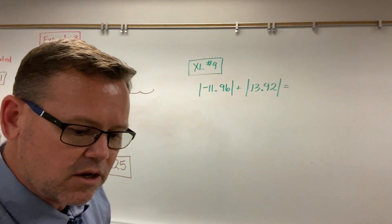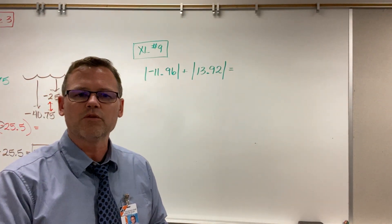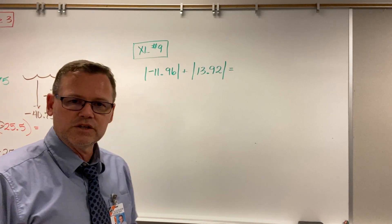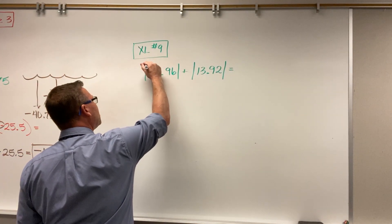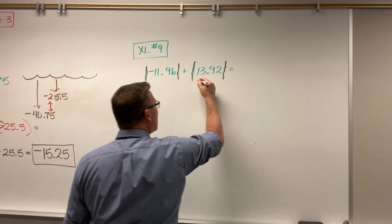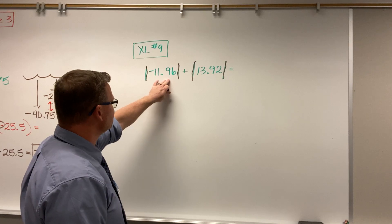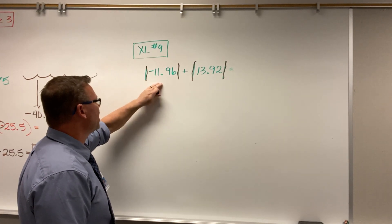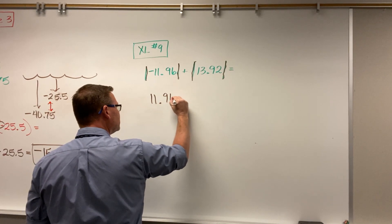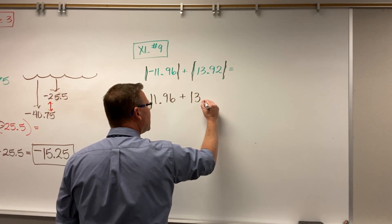I'm only showing you part of XL9 because I want you to really understand how this works. You need to be working out these problems yourself — if you don't get it right, you hit 'similar question' or 'help me'. I wanted to do a refresher on this. These lines right here are absolute value — in other words, how far are these numbers from zero? Even though you've got a negative 11 and 96 hundredths, this is how far a negative 11 and 96 hundredths is from zero — that's 11 and 96 hundredths. And then plus: how far is 13 and 92 hundredths from zero? It's 13 and 92 hundredths.